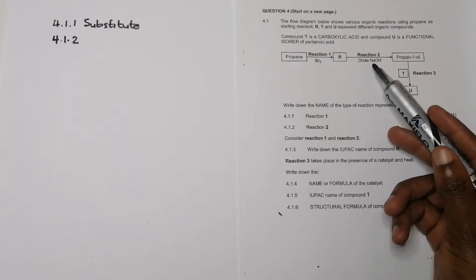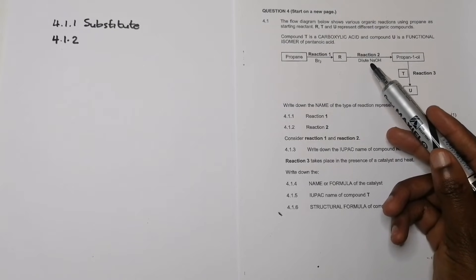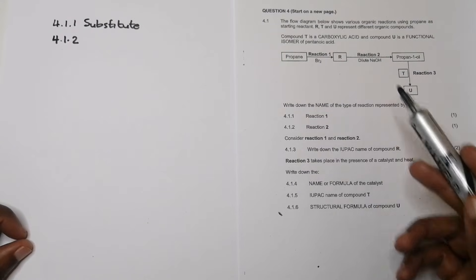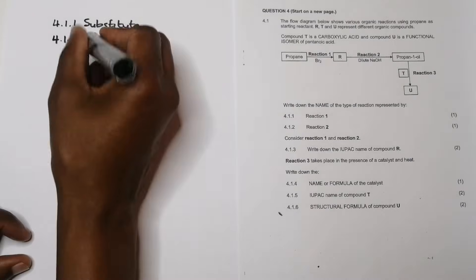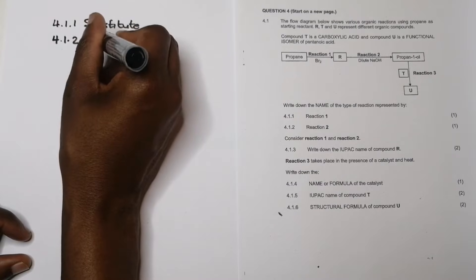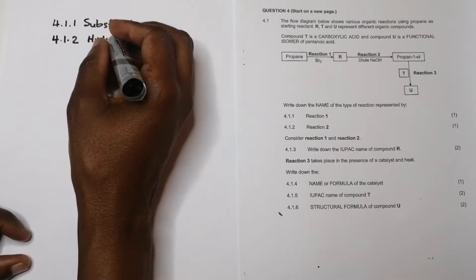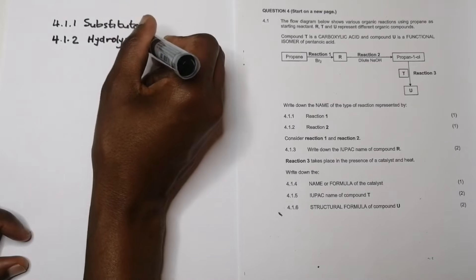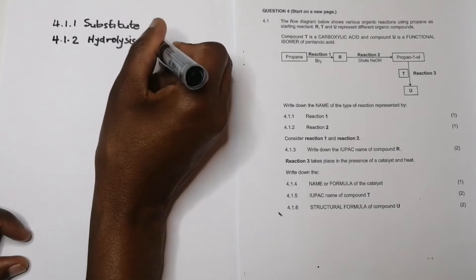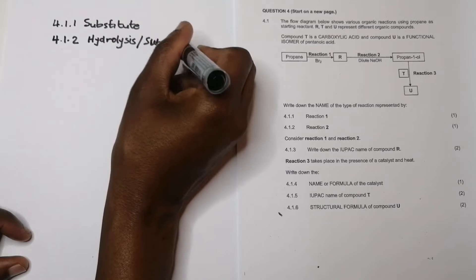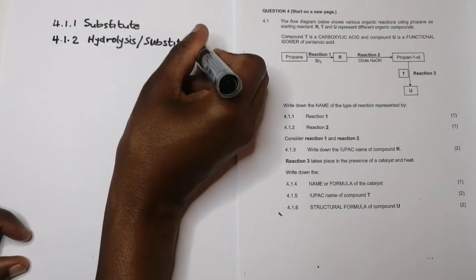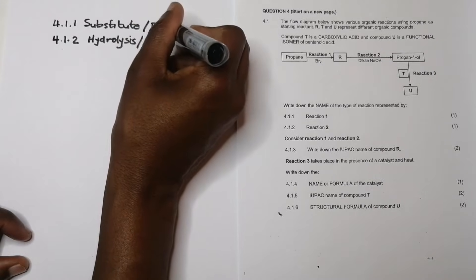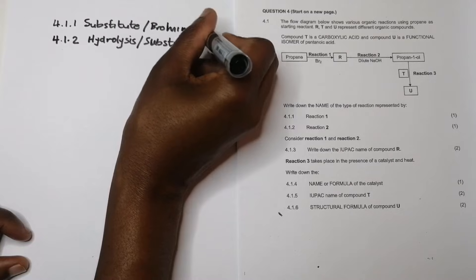For question 4.1.2, reaction two takes the haloalkane formed and reacts it with dilute sodium hydroxide. When using dilute NaOH, this is hydrolysis — or you can call it another substitution reaction. So you can say substitution reaction, or simply hydrolysis. Reaction one was bromination or halogenation.